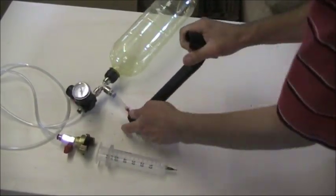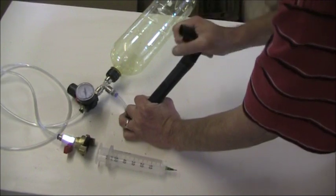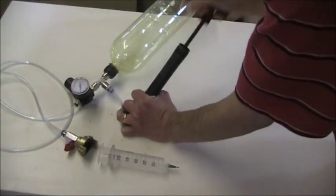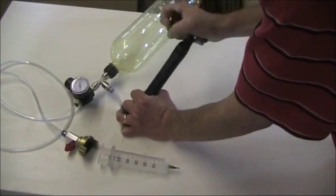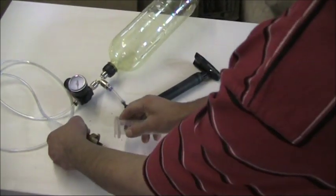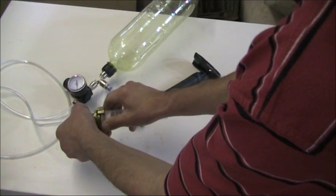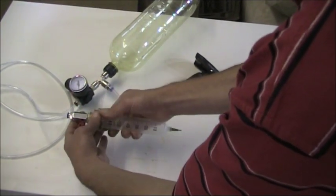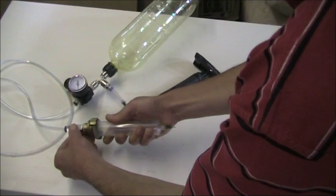So here I just pressurize the soda bottle with a bicycle pump. It's not very high pressure at all. Connect up the syringe onto the connector. I have to make a little collar there to help get a good seal.